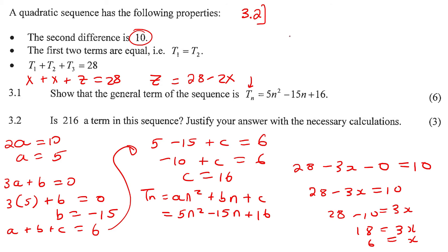If they're saying is 216 a term in the sequence, you're going to put the 216 over there. So you're going to say 216 equals, and now you're just going to solve and see if n can be a possibility. I'm going to take everything to the right-hand side, and this will become plus 16 minus 216, and that will be minus 200.